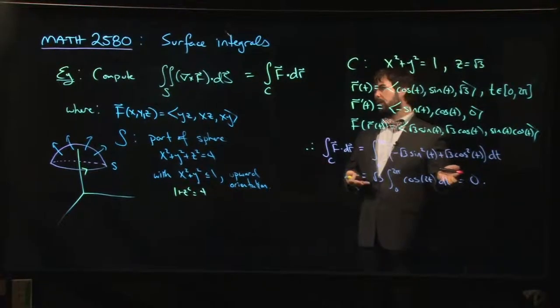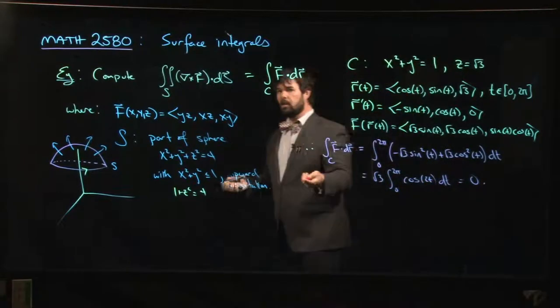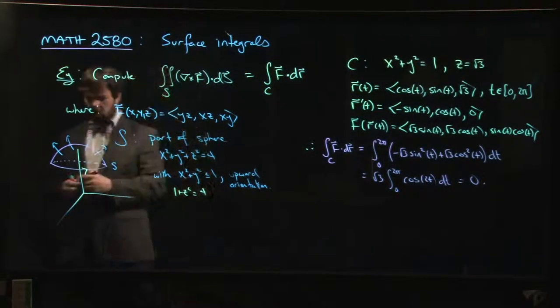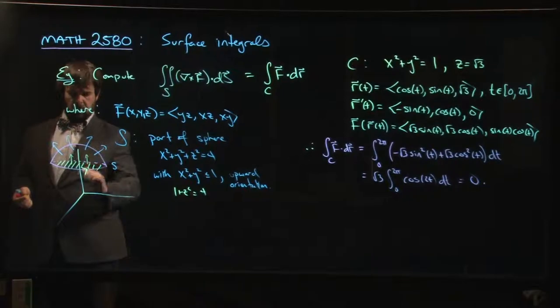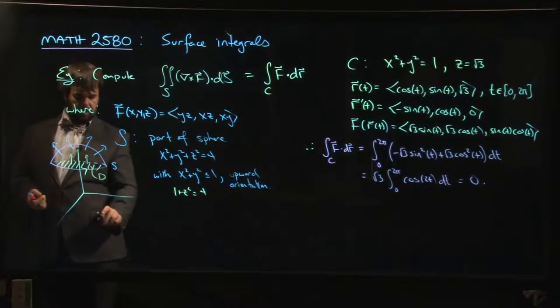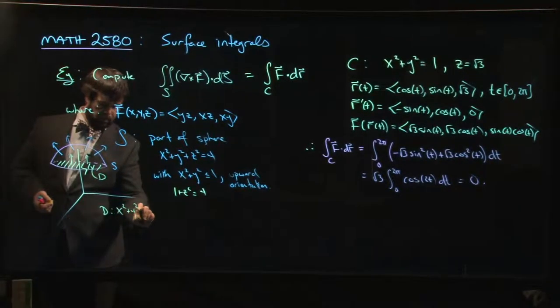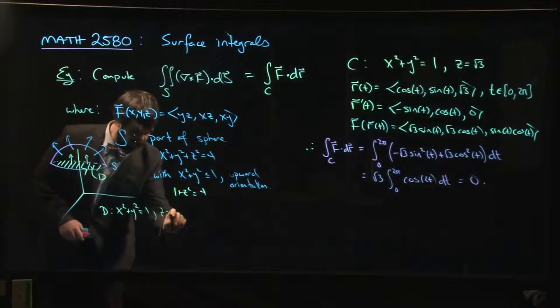So that's one way you could tackle this problem. We get 0, so now we know the answer is 0. Another way that you could do it is you could also say that boundary curve there, it's also the boundary of a disk. We'll call it d. So d is going to be the disk x squared plus y squared equals 1, with z equal to root 3.